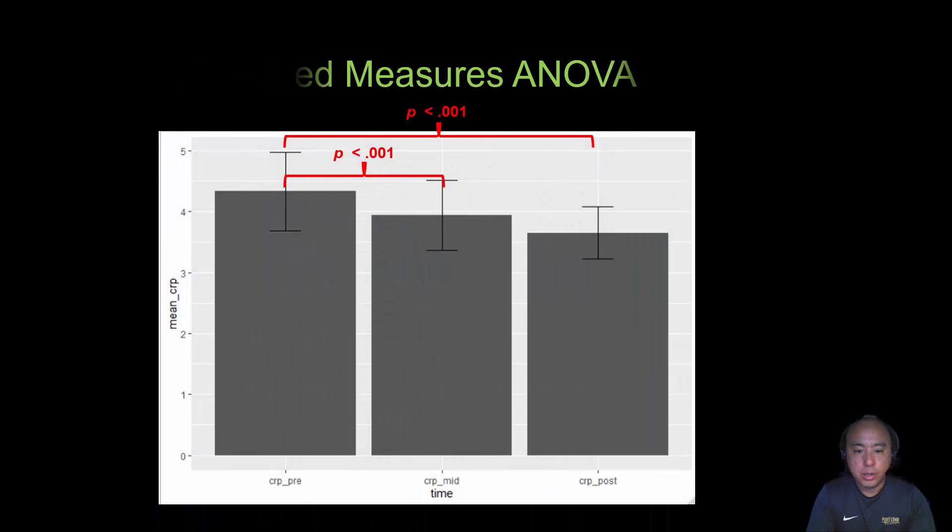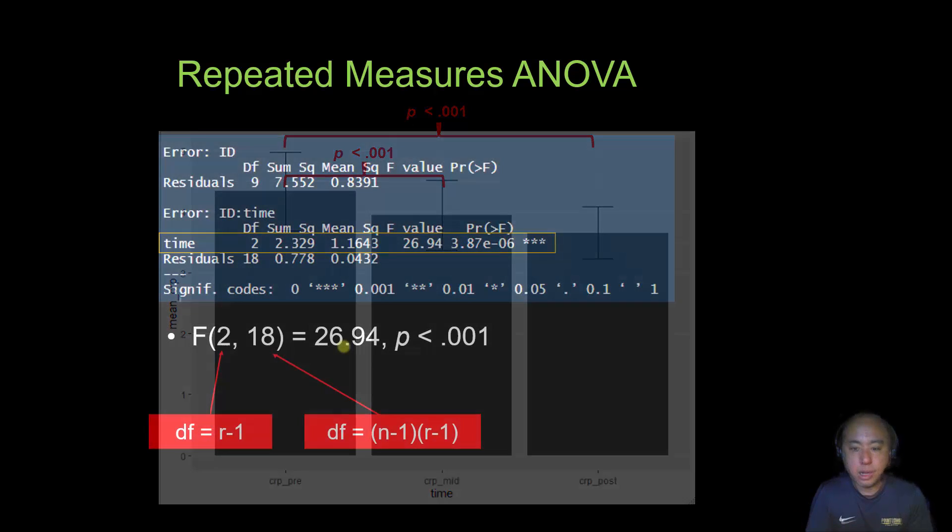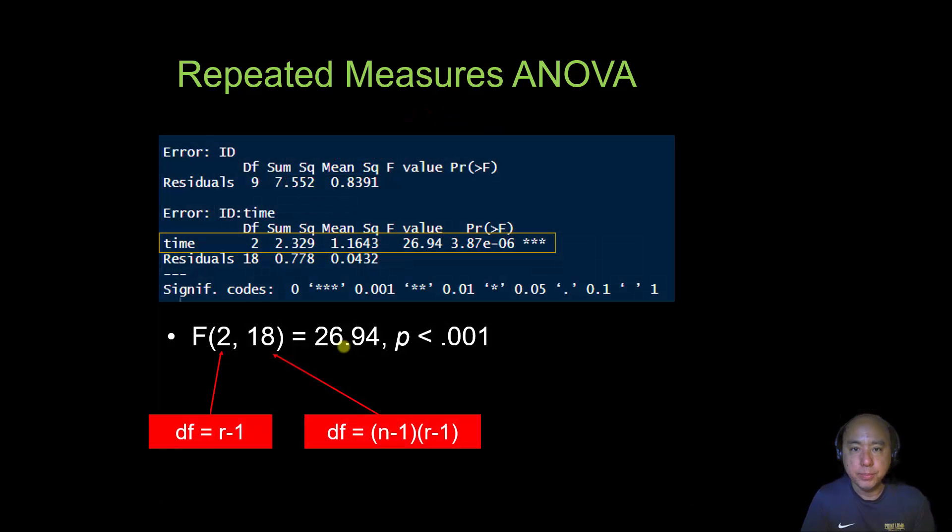The way that you would display or report this finding is what I like to do is put this in a graph. So this is the same graph I showed you earlier. The only difference now is I've added these p-values that show that there is a significant difference in CRP between the pre and the mid, as well as between the pre and the post time points. I shouldn't say difference. I should say there's a change. But specifically, there was a reduction in CRP, mean CRP, between the pre and the mid, as well as between the pre and the post time point in this analysis. So that's how you would interpret a repeated measures ANOVA.